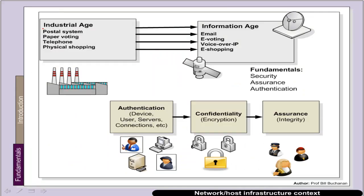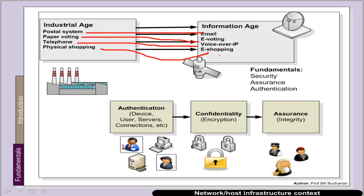At the present time we're moving from what's called an industrial age into an information age where things and methods of doing things are changing. For example, our postal system is being largely replaced by an email system, paper voting by e-voting, a telephone system is now being replaced by a voice over IP system, and physical shopping by e-shopping.